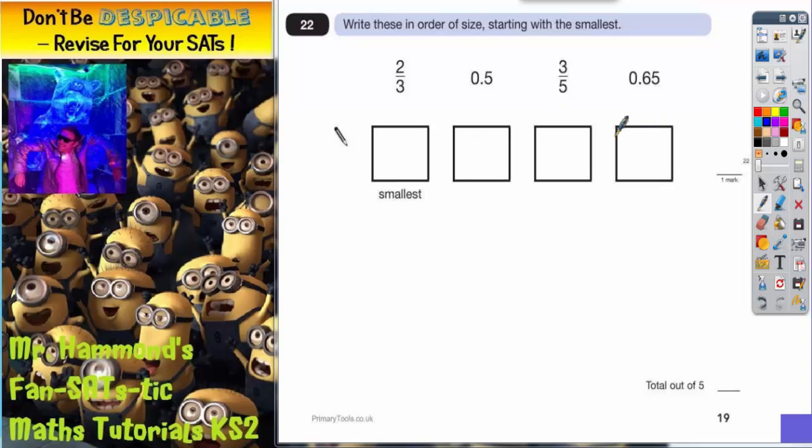Now the easiest thing to do is to turn all of these into percentages or decimals to make them easy to compare. Anytime you've got fractions you want to be getting rid of those fractions and replacing them with percentages or decimals to make them easy to compare.